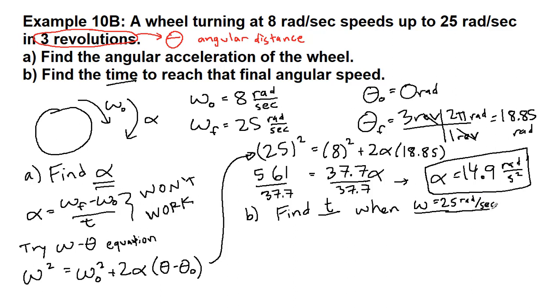You can also use that final theta value, but then you're going to have to use the quadratic formula, and that's way more work. This is going to be a lot simpler for us. So find T when omega final is 25 radians per second.